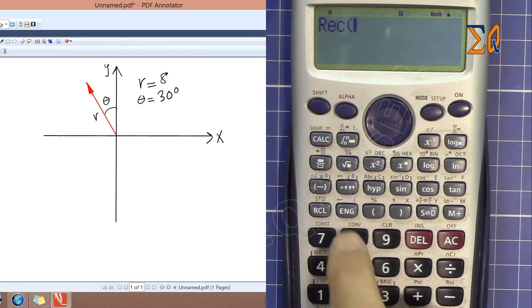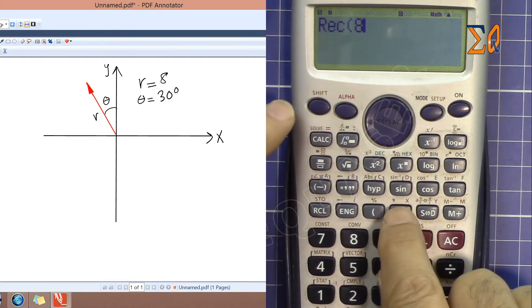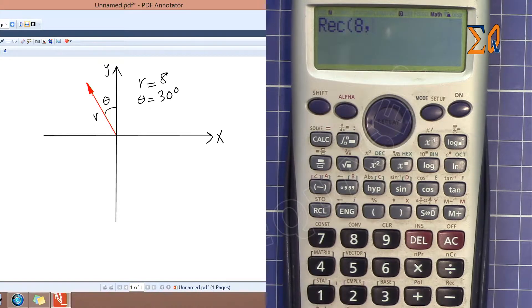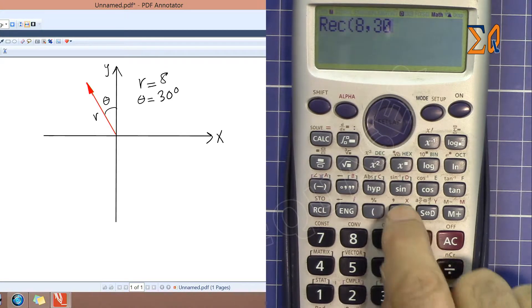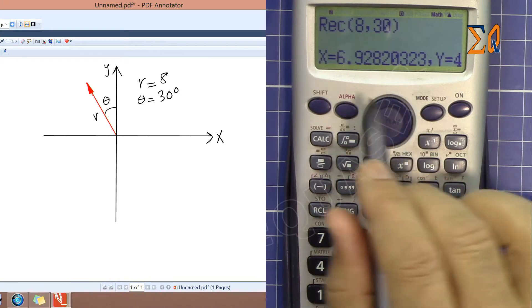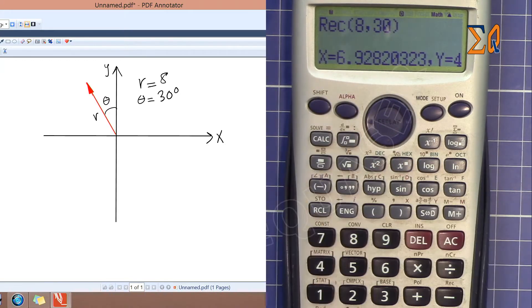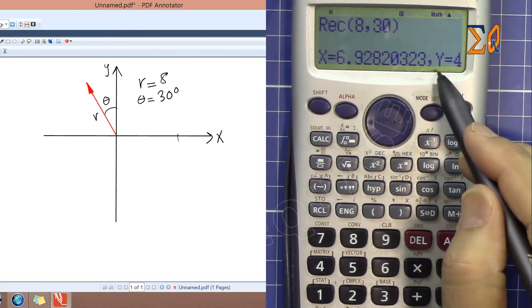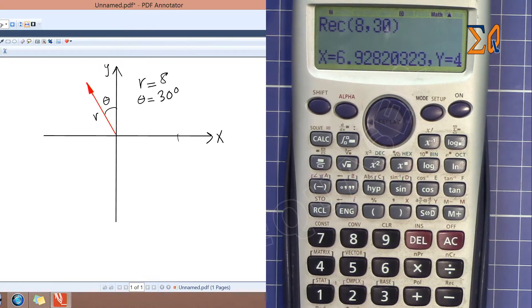R is 8, and press shift and this comma, and 30. Now this shows X as 6.9 which is here somewhere, and it shows Y as 4 which is incorrect.